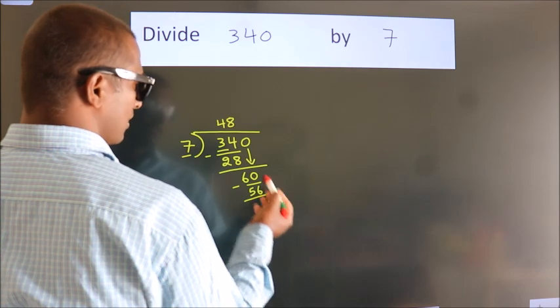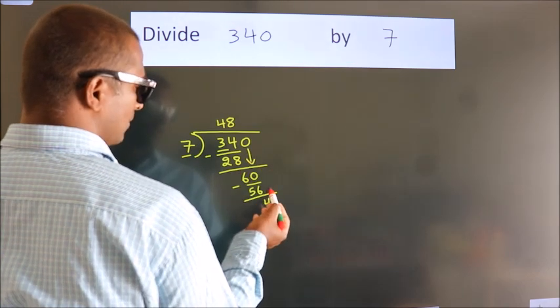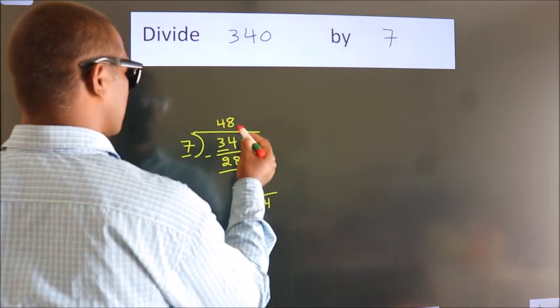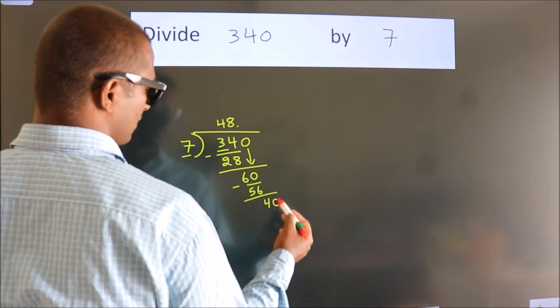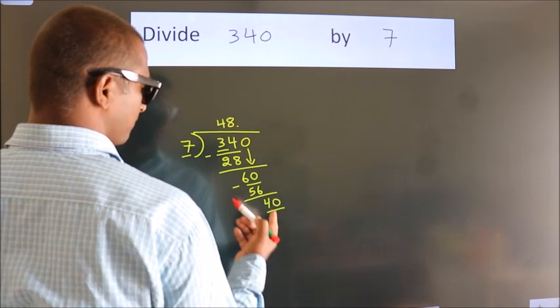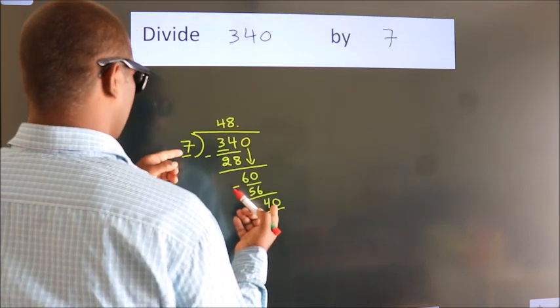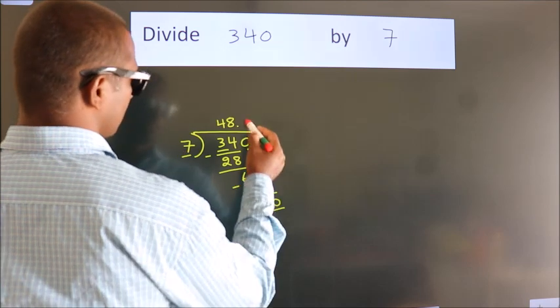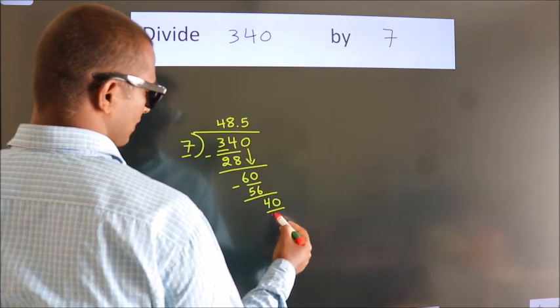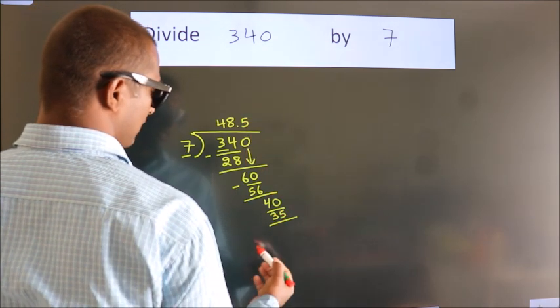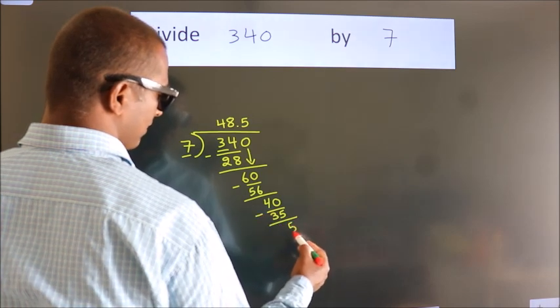After this, no more numbers to bring down. So what we do is we put a dot and take 0. So 40. A number close to 40 in the 7 table is 7 fives, 35. Now we subtract. We get 5.